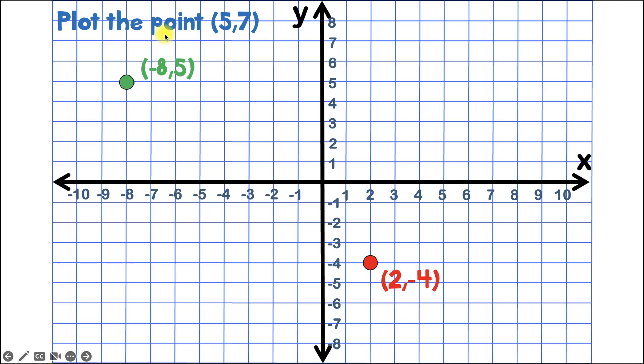The next example says plot the point 5, 7. Our first number is positive 5, and since this is positive 5, it means we're going to go 5 units to the right. And then the second number is 7, so from there we'll go 7 units up.